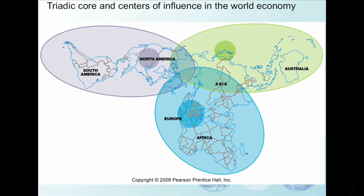This map shows the triadic core and centers of influence in the world economy. The three key cores are North America, Europe, and Japan in Asia, and you can see their spheres of influence around their particular areas. Core regions have a couple of characteristics: they dominate trade, they control the most advanced technologies, and they have high levels of production with diversified economies.